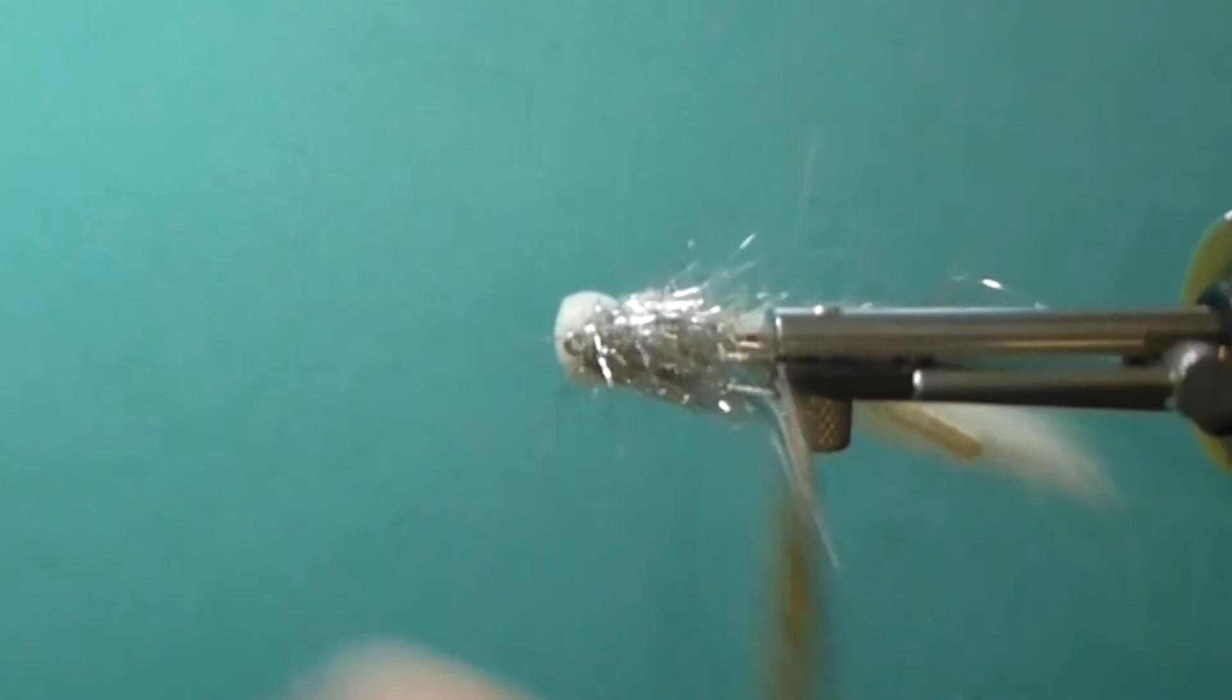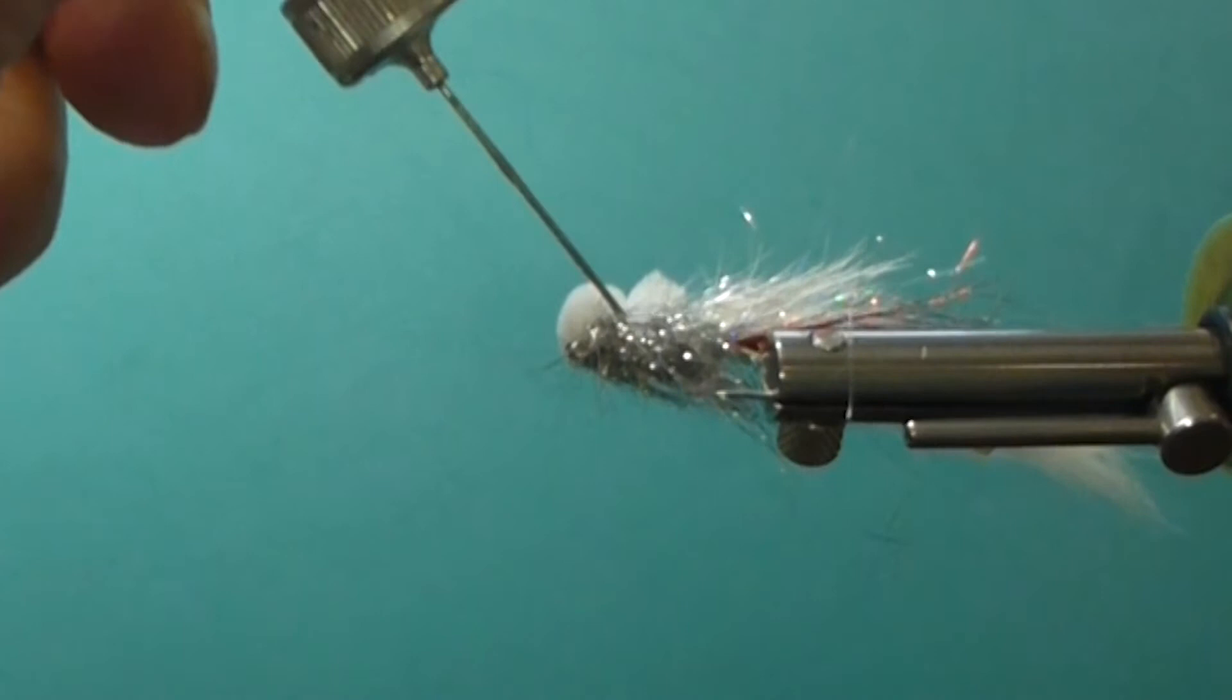And then important, we get some head cement right on here, right running into the thread. And that'll secure that nicely. So that's a balloon head zonker.